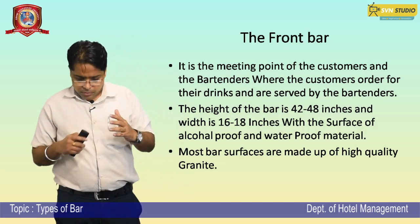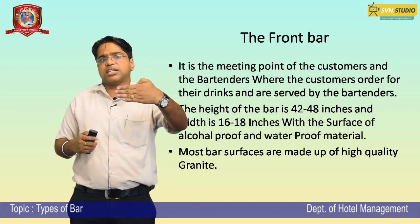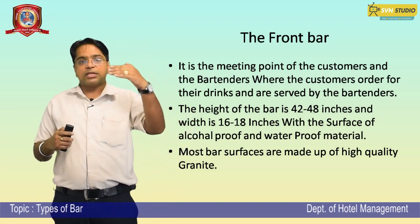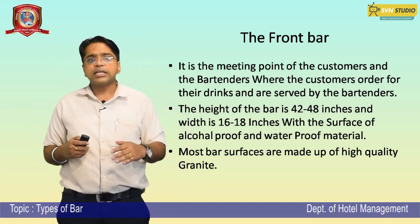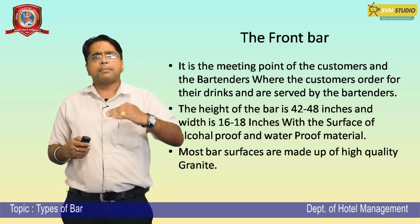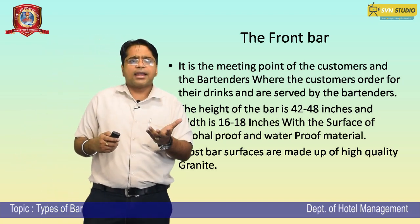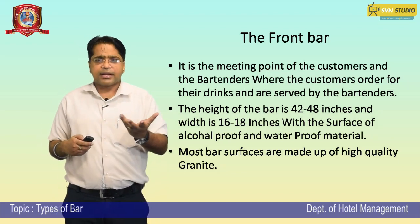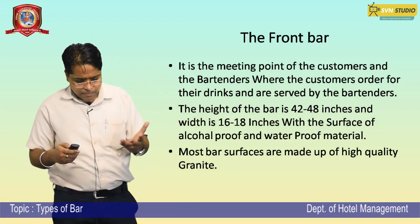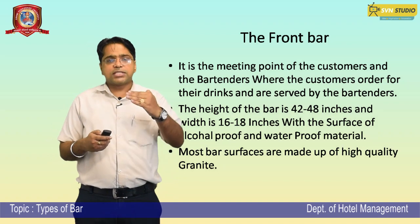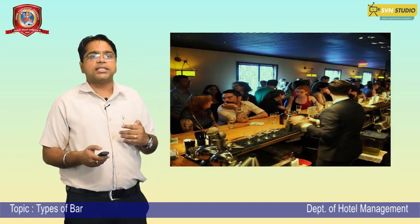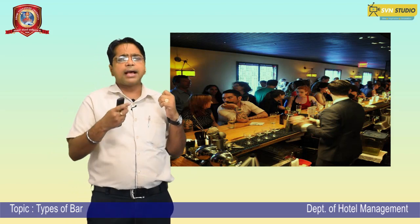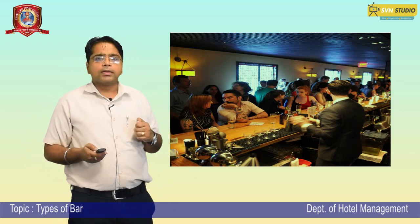What is front bar? The front bar is the meeting point of the customers and the bartenders, where customers order their drinks and are served by the bartenders. The height of the front bar is generally 42 to 50 or 52 inches, and the width is 16 to 18 inches. The surface is made of alcohol-proof and waterproof materials — most bar surfaces are made of high-quality marble or granite.